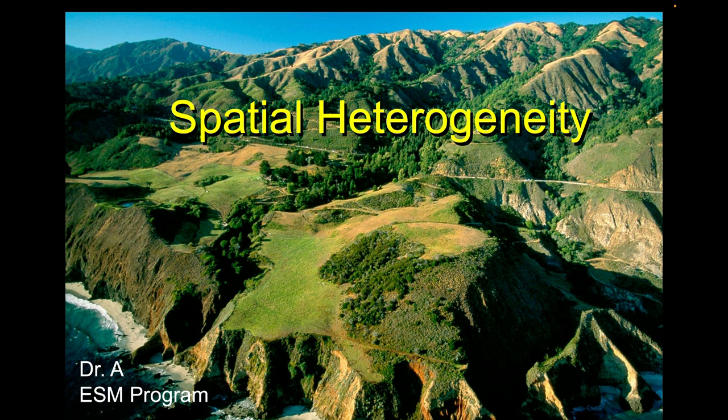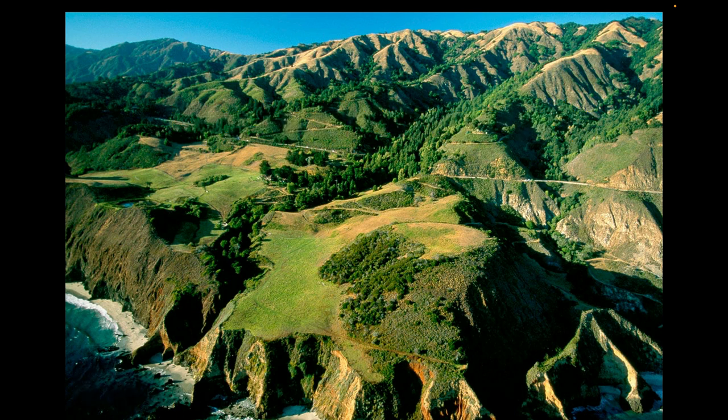Brief introduction to spatial heterogeneity. As we look at California coastal headlands, we see a good amount of spatial heterogeneity. We see the coastal hills coming up, we see roads, and we see relatively denuded areas.